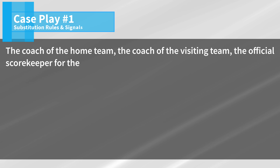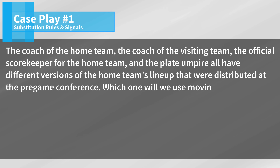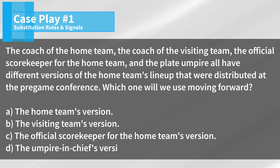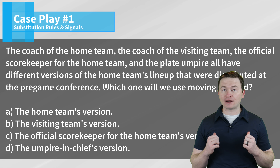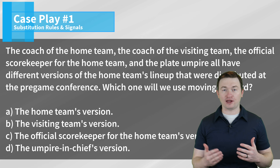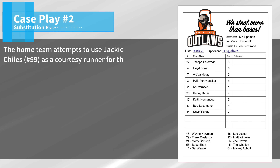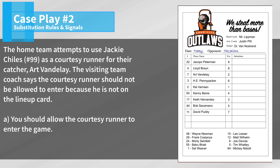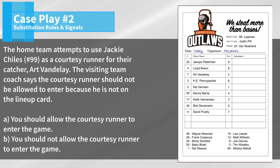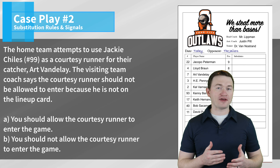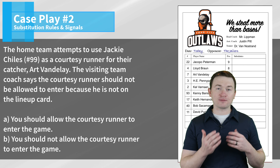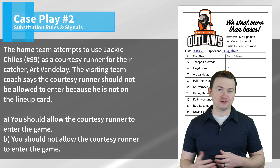Now that we've reviewed substitution signals, let's review this week's case plays. Case play number one: the coach of the home team, the coach of the visiting team, the official scorekeeper for the home team, and the plate umpire all have different versions of the home team's lineup that was distributed at the pre-game conference. Which one will we use moving forward? The correct answer is D — we're always going to use the plate umpire's lineup card when tracking substitutions and determining who is or isn't the proper batter. Case play number two: the home team attempts to use Jackie Childs, number 99, as a courtesy runner for the catcher, Art Vandele. The visiting team coach says the courtesy runner should not be allowed to enter because he is not on the lineup card. The correct answer is A — you should still allow that courtesy runner to come into the game. Just because the coach failed to list them on the lineup card does not mean they can't come into the game as a legal substitute.